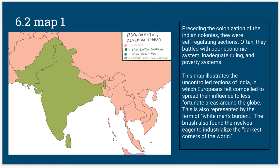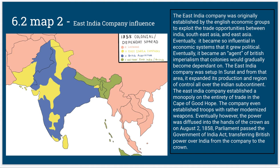The Europeans felt the need to take over and control this section due to their riches and the general idea of the white man's burden, feeling that they were less civilized and deserved to be controlled. In the 6.2 map, we see the East India Company influence, as it was originally established to exploit the trade between the Indian regions and other places around the world. Eventually, it became so influential that the economic systems caused many independent Indian regions to be extremely dependent on the company.